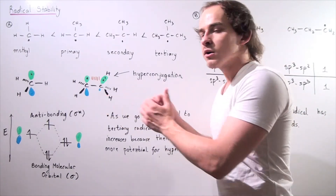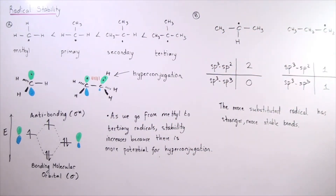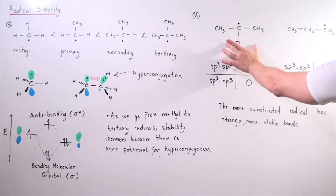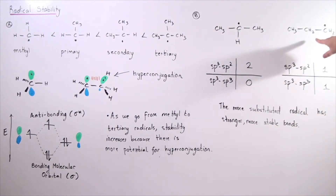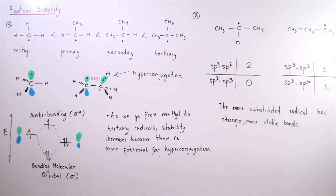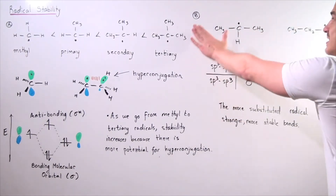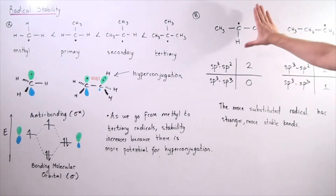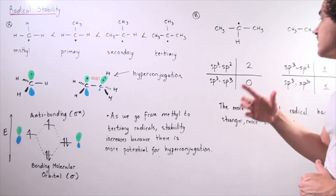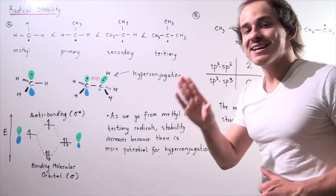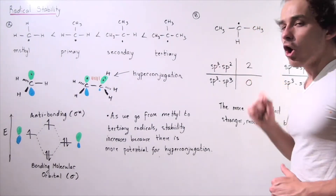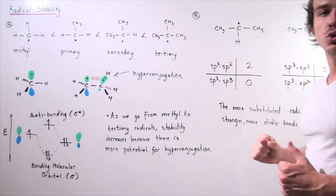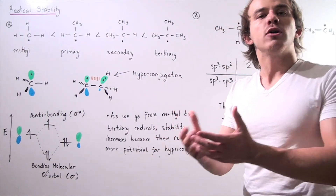That's only the first part of the story. For the second part, let's compare a secondary radical carbon and a primary radical carbon. Here the central carbon has a single electron and is attached to only one other carbon, while in the secondary case the central carbon is attached to two different carbons. Let's examine the types of carbon-carbon bonds found in these two molecules and compare their stability.